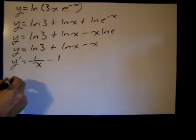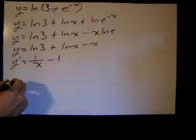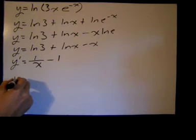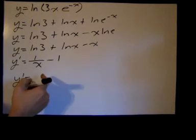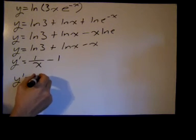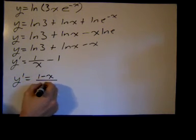If you really wanted to, you could, it wouldn't be a bad practice, it's easy. You get a common denominator and you would get 1 minus x in the numerator over x. And that would be your derivative.